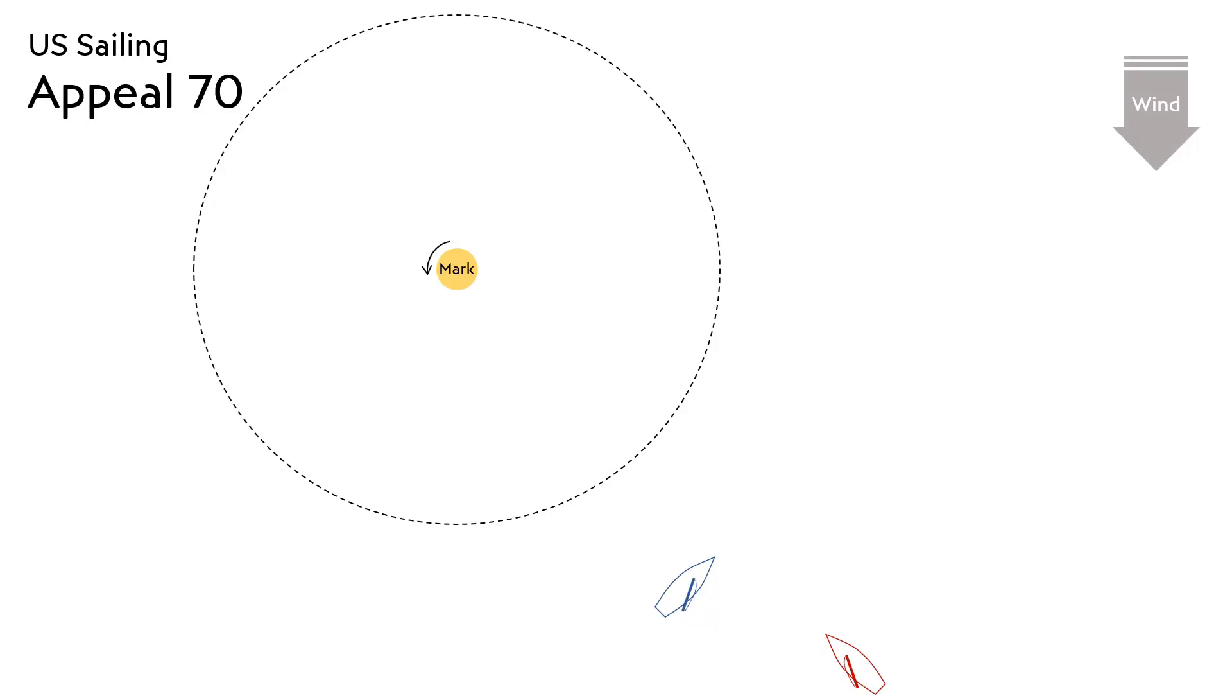In U.S. Sailing Appeal 70, two boats were approaching a windward mark. The blue boat tacked outside the zone, with the red boat clear astern when they completed their tack.